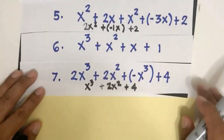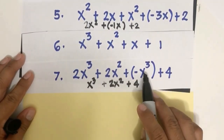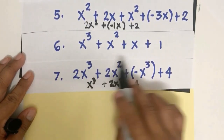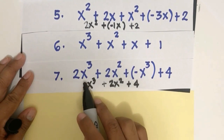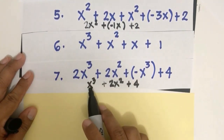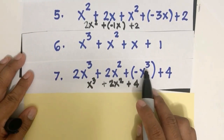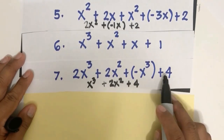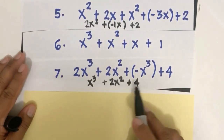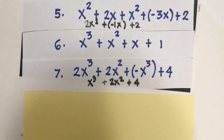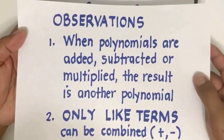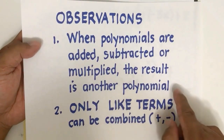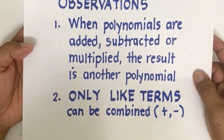For x squared plus 2x plus x squared plus negative 3x plus 2: x squared and x squared are like terms — add 1 plus 1 to get 2x squared. Then 2x and negative 3x are also like terms — add 2 plus negative 3 to get negative x. Copy the positive 2. For 2x cubed plus 2x squared minus x cubed plus 4: x cubed terms are like, add 2 plus negative 1 to get x cubed. Copy x squared and constant 4. Answer: x cubed plus 2x squared plus 4.